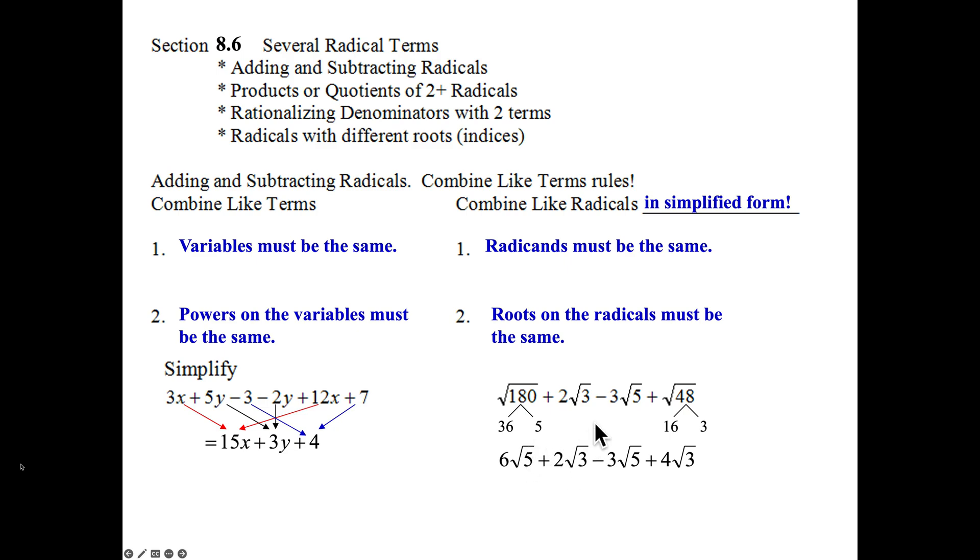Drop down, plus 2 square root of 3, drop down, minus 3 square root of 5. The square root of 16 is 4, the square root of 3 left over inside the square root. Now, these two terms here are alike. 6 times the square root of 5 minus 3 is the square root of 5. The square root of 5's are the same, so combine the two coefficients. 6 minus 3 is 3, 3 square root of 5. Positive 2 square root of 3 plus 4 square root of 3. The square root of 3's are the same. Add the 2 and the 4 together to get 6 square root of 3.